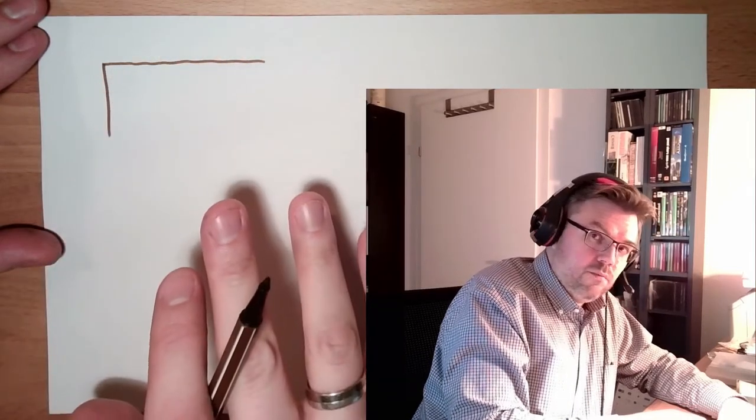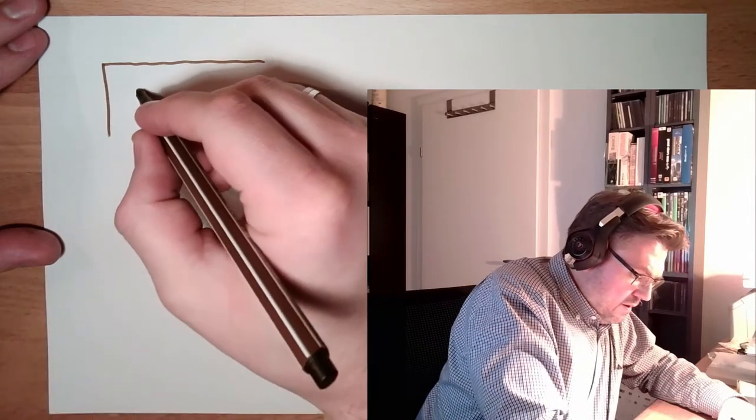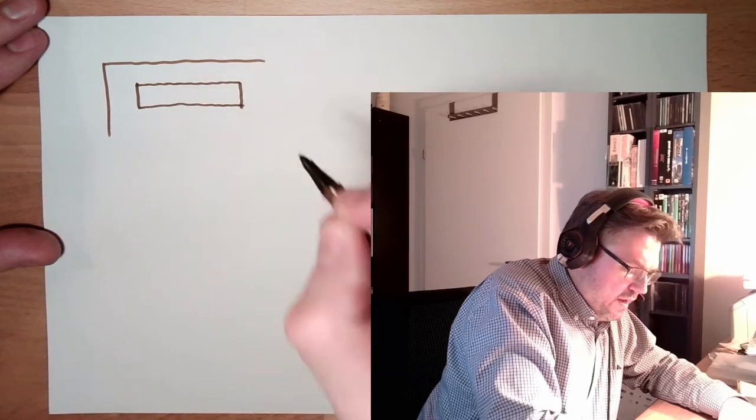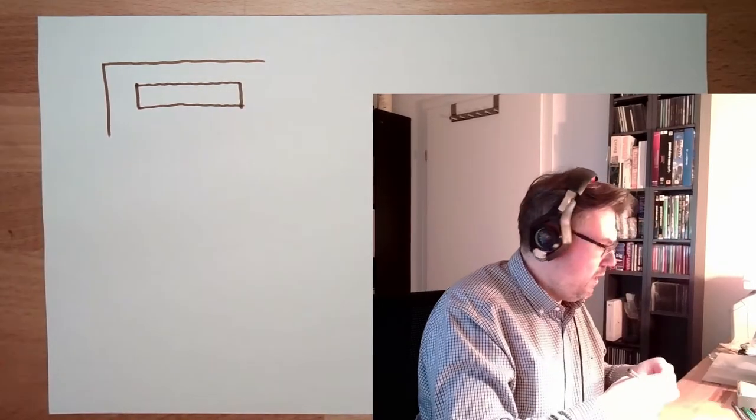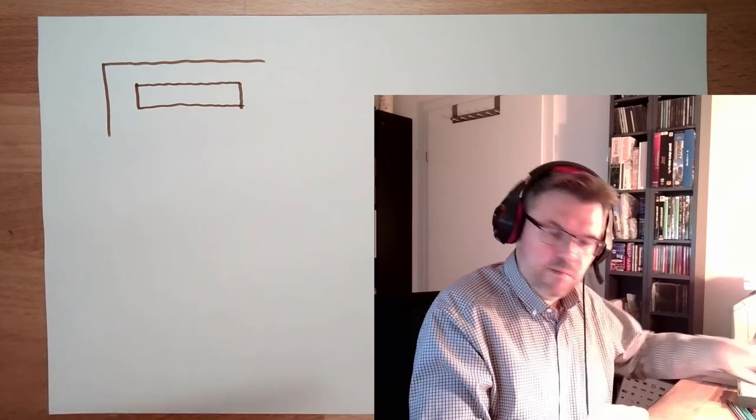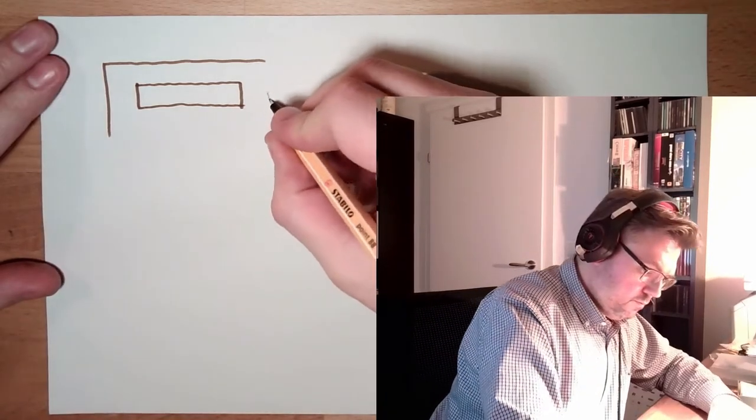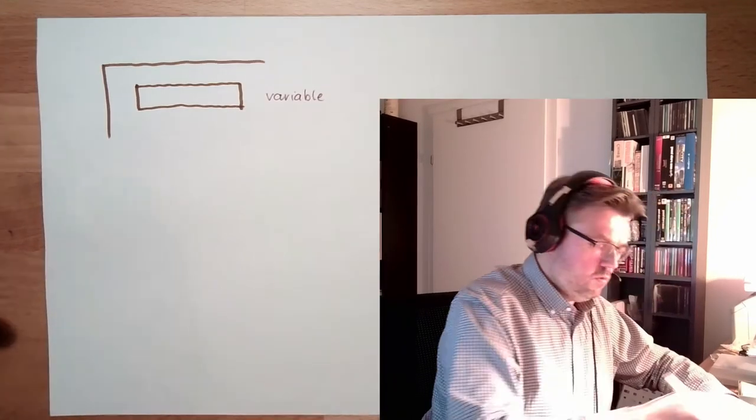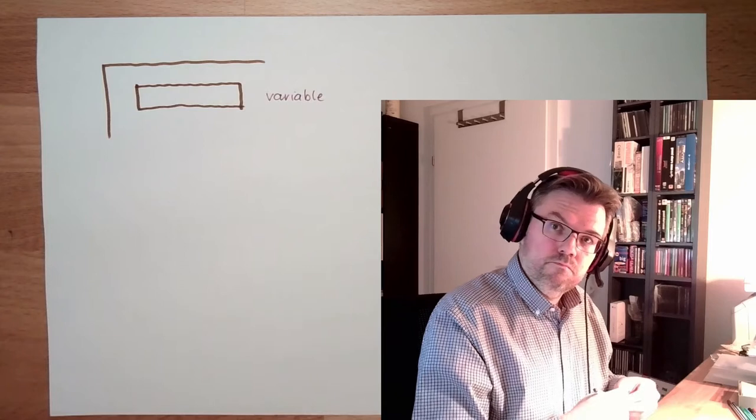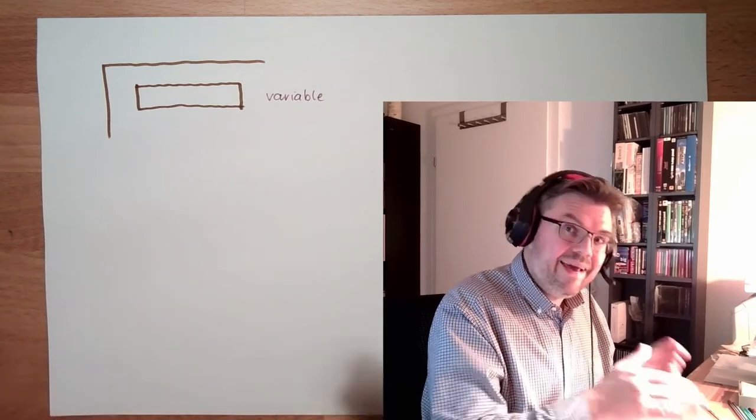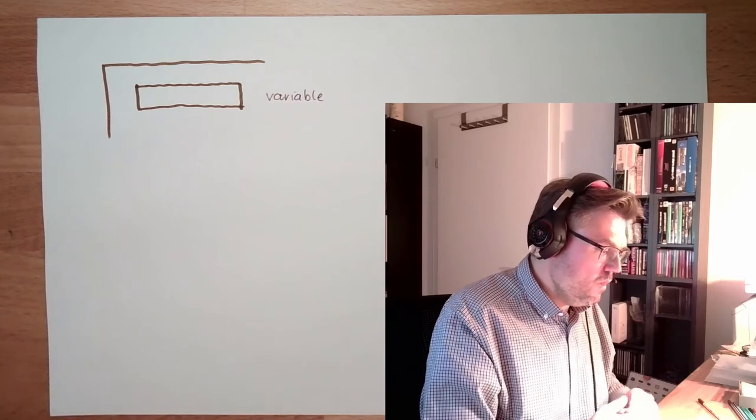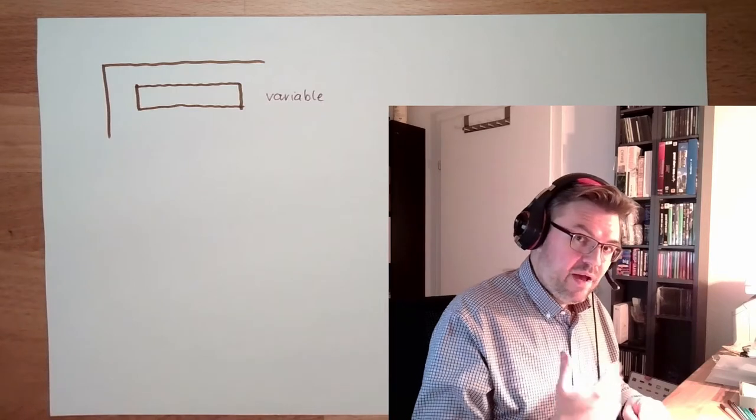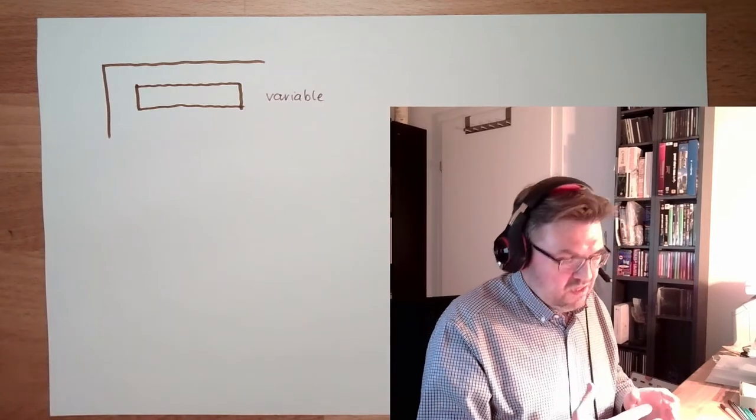Inside this memory there are places where I could store something. A variable is a certain part of the memory which I can give a name. In my case, my variable is called 'variable'. So a variable is a named memory portion I can access with my program, and that's basically it.